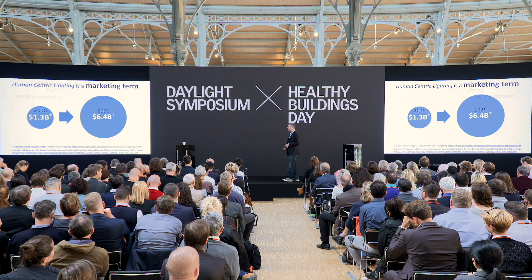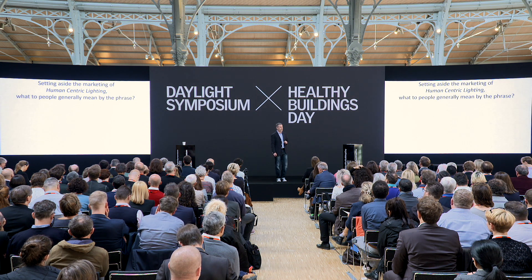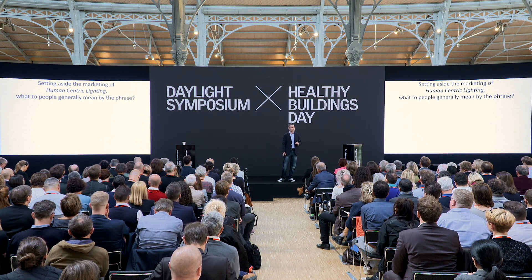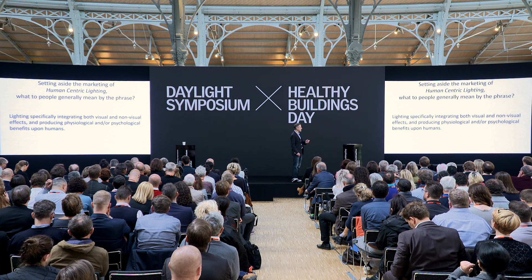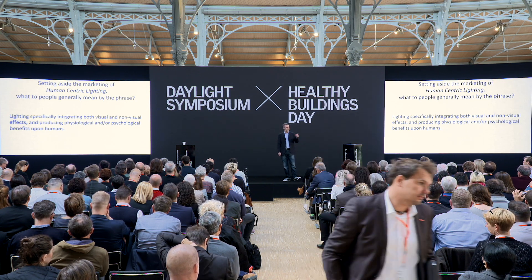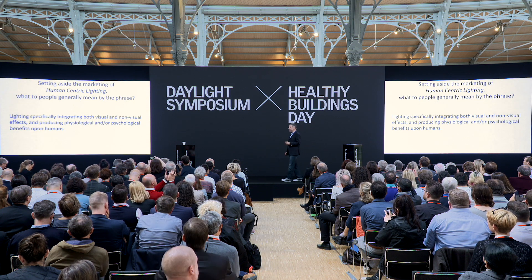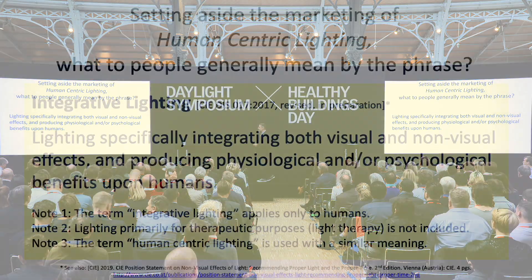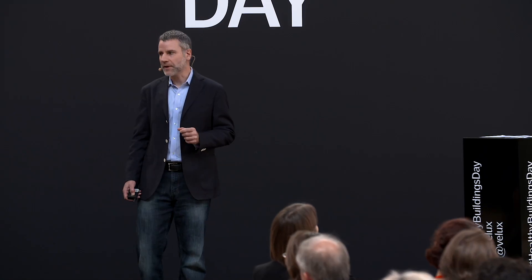Setting aside the marketing idea, I'd like to come up with an operational definition for what people generally mean by human-centric lighting in 2019: lighting specifically integrating both visual and non-visual effects and producing physiological and/or psychological benefits on humans. Benefits is important — both visual and non-visual, physiological and psychological. As it happens, this definition was actually written by the International Commission on Illumination, and they do not use the phrase human-centric lighting. Instead, in a footnote, they use the term integrative lighting — essentially integrating the visual and non-visual effects of light.